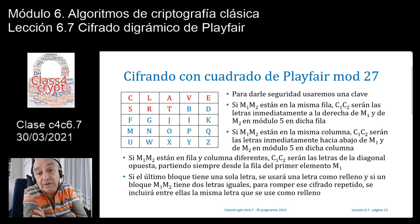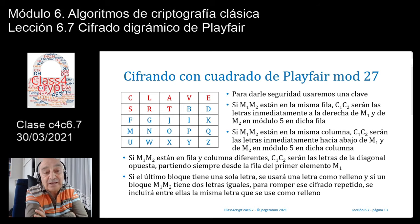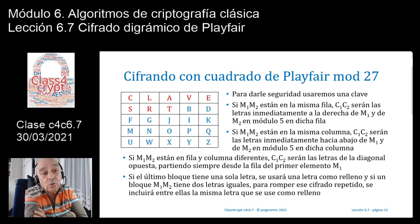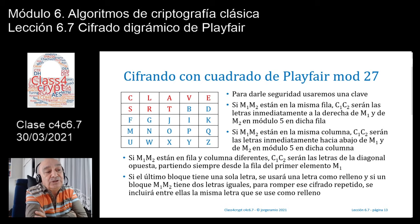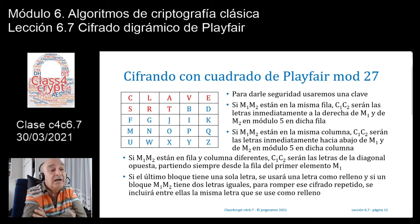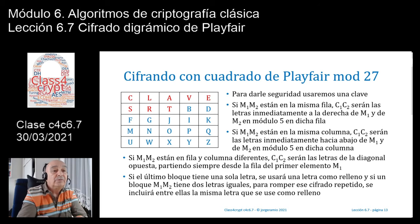Como ciframos por bigramas, el número de letras tiene que ser par. Si el número de letras fuera impar habría que introducir un relleno en el último bloque. Si cifro un texto que tiene 19 letras tendré que llegar a 20 letras e introducir una letra de relleno al final; normalmente la X, la Y o la Z, según acuerden los interlocutores. Además, cuando hay repetición de dos letras iguales juntas, como dos R's o dos L's, hay que romper esa igualdad insertando también la letra de relleno entre ellas.